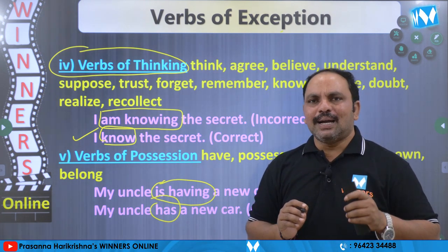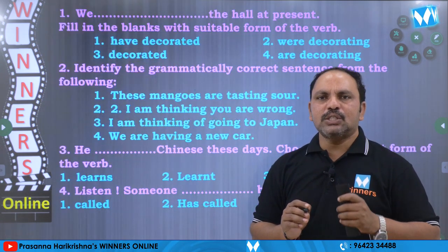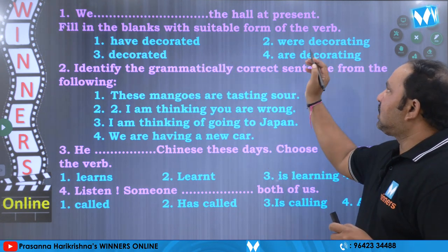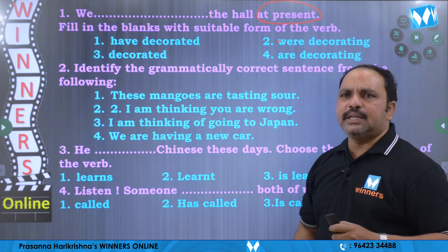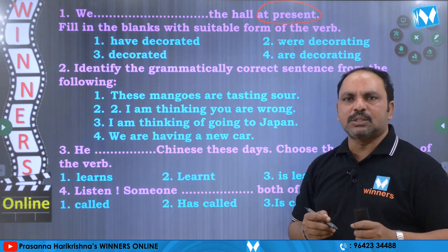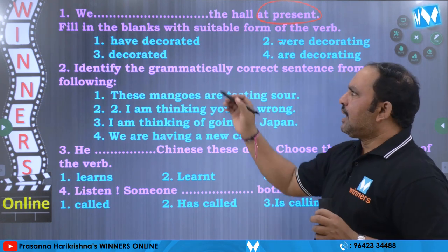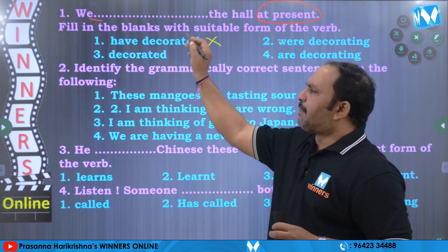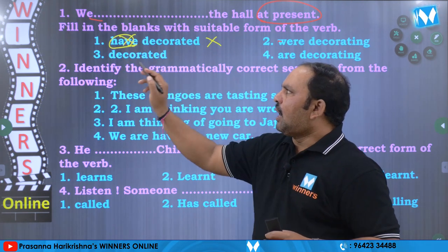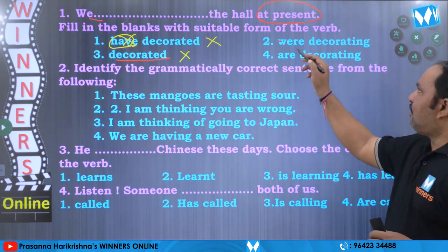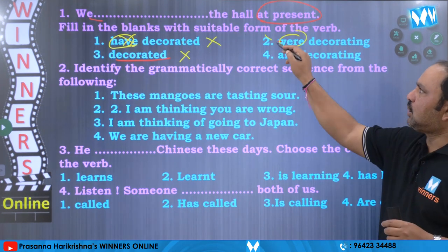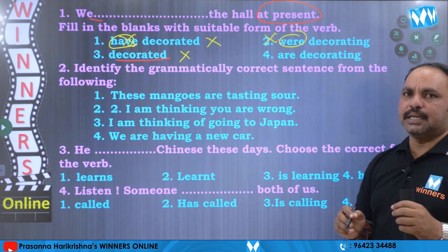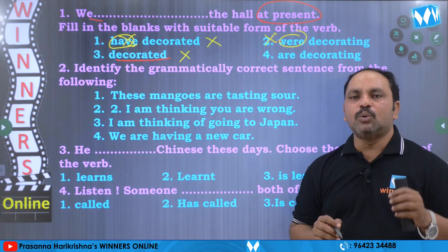Now this is the end of the second tense — present continuous tense. Let us look at a few questions. First question: 'We dash the hall at present.' Indulo clue word enti? At present — adhi present continuous tense lo vosthadi kadaa. Am, is, are plus V4 raayali. Subject 'we' undi kabatti 'are' untundhi. 'Have decorated' — wrong, endukante present continuous tense lo 'have' ane verb undadhu. 'Decorated' V2 idhi kuda tappu. 'Var decorating' kuda radhu. Correct answer: are decorating. We are decorating the hall at present.